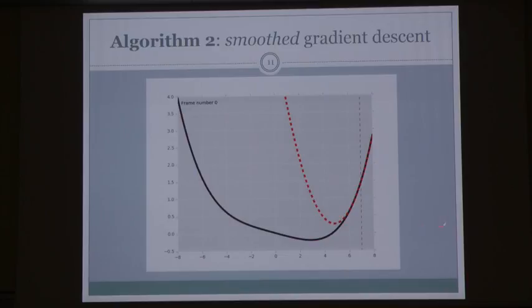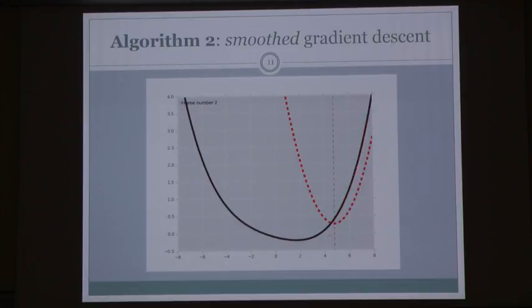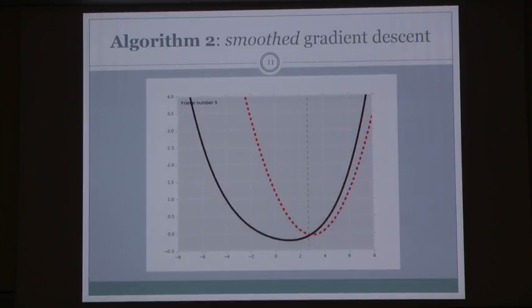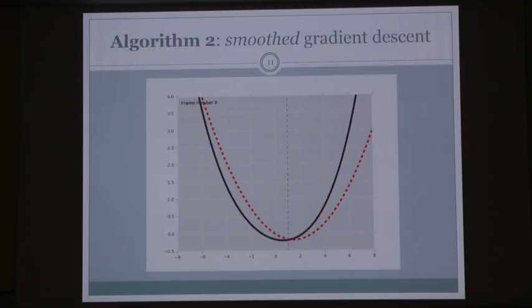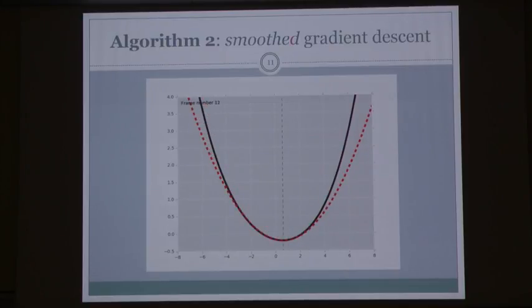I define algorithm number two, a slight variant of algorithm number one that computes the VB Gaussian approximation. The difference — highlighted in red — is in the computation of the linear and quadratic terms: now I compute them as expected values under my current Gaussian approximation. These are approximately equal to the values in algorithm one. This algorithm has a nice intuitive explanation: same as Newton's method, but at each time step we also change the function of which we're computing quadratic approximations — smoothing the true energy function with the current Gaussian approximation. That's why I call this smooth gradient descent.